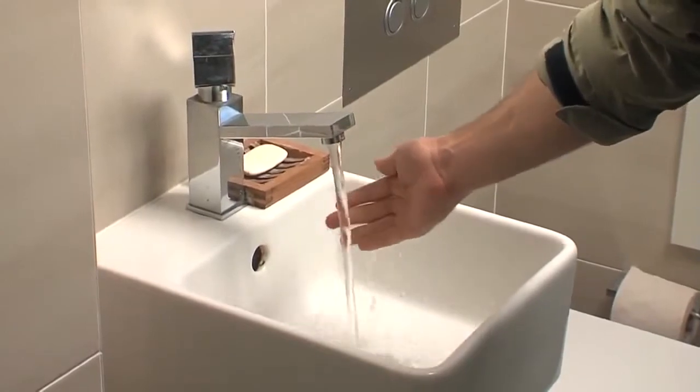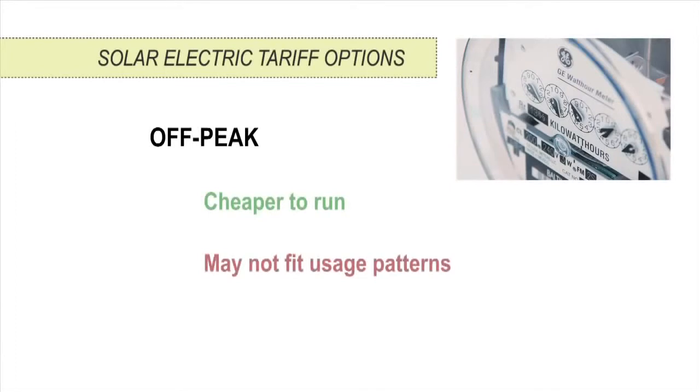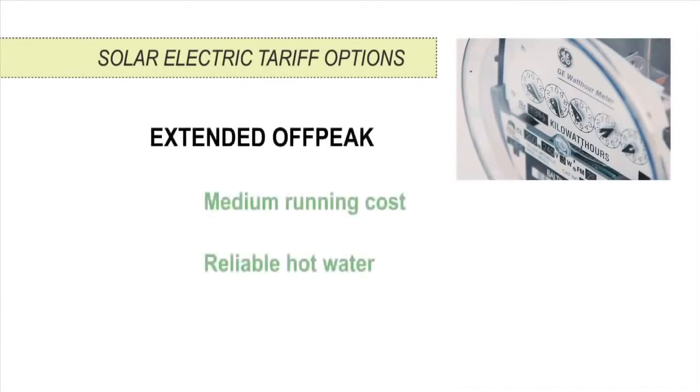When advising the householder on their energy tariff options, explain the pros and cons of each option. A regular tariff allows boosting at any time, but it won't lead to a reduction in their bills if their previous system was electric off-peak. Off-peak will be cheaper but may not fit the hot water usage patterns of all households. If available, extended off-peak or off-peak two is often a good compromise.